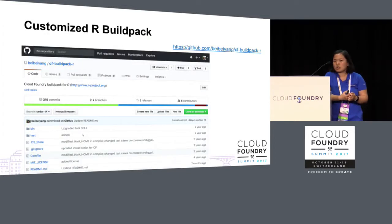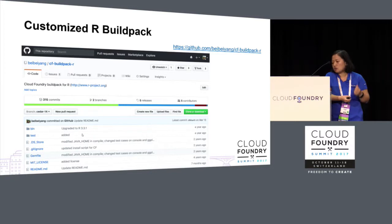Originally, our plan was to use a customized R buildpack to push this app to Pivotal Cloud Foundry. There are many R buildpacks you could find on GitHub. We use this buildpack shown on the screen — you could go to this link to check it out. I'll show some problems as well as the benefits of using the customized buildpack.